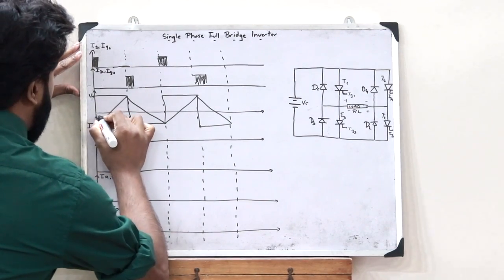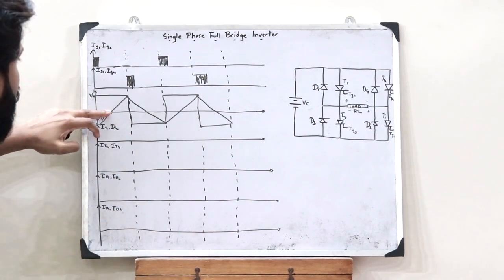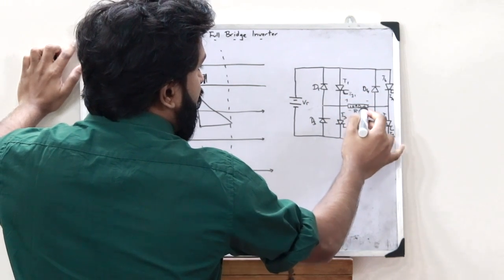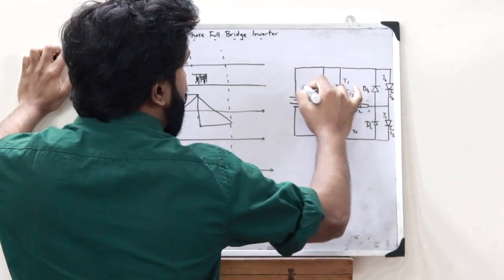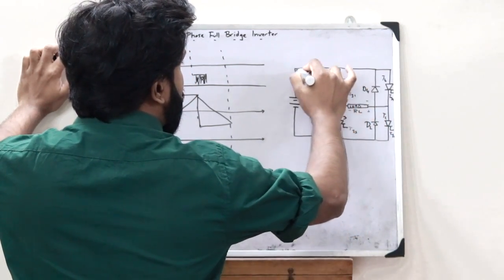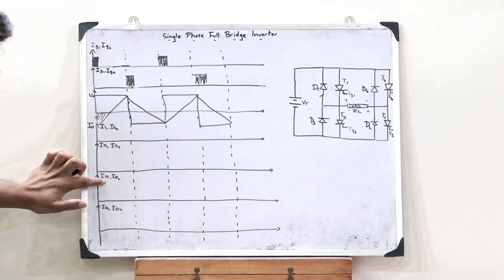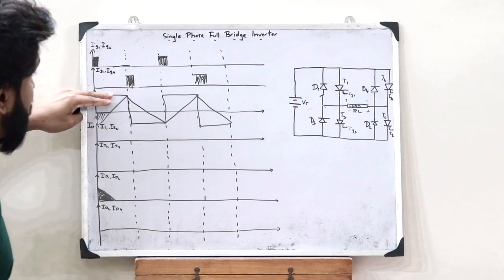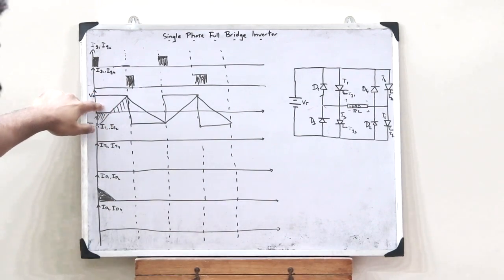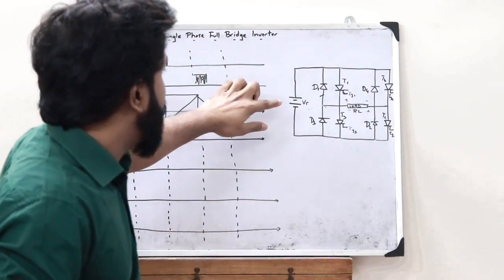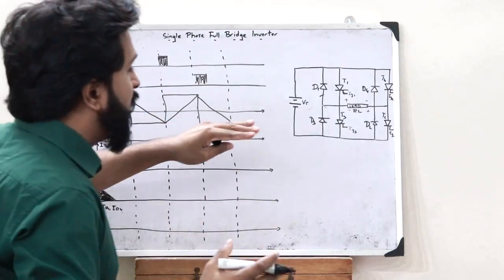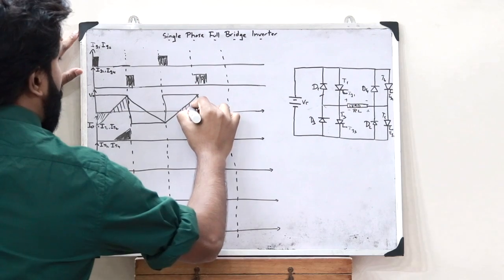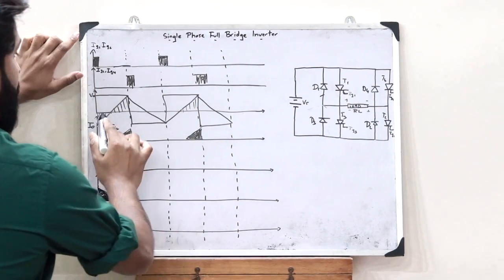Let us consider a particular region where the voltage is positive but the current is negative. In this situation, current flows from the load through diodes D1 and D2, completing the circuit as a negative current — so we obtain current across diodes D1 and D2. In the next region, both voltage and current are positive, so the current is supplied by the voltage supply itself, flowing through SCRs T1 and T2, giving us I_T1 and I_T2.